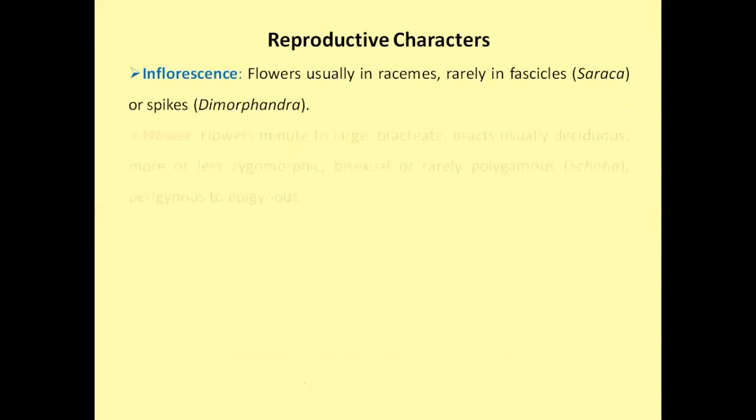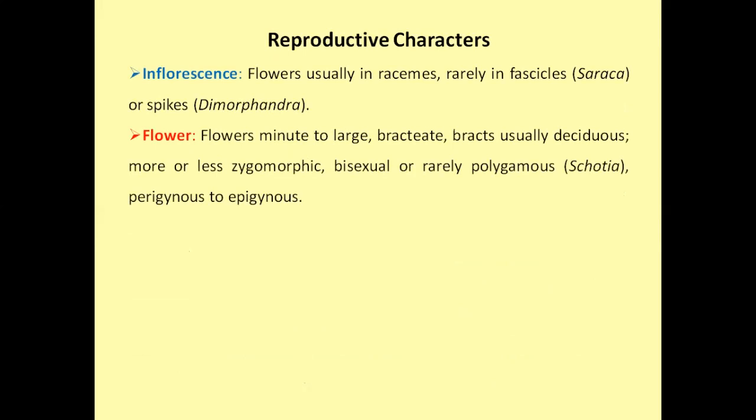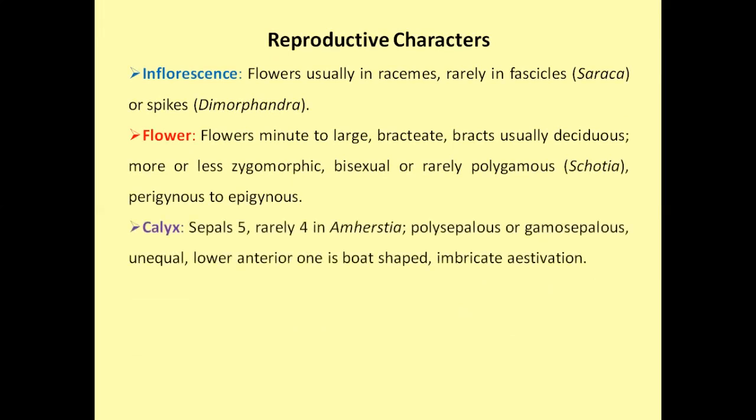Now we will discuss reproductive characters. The flowers are usually in racemes, rarely in fascicles or spike inflorescences. The flowers are minute to large, bracteate, and bracts are usually deciduous. The flowers are usually zygomorphic, bisexual or rarely polygamous, perigynous to epigynous. The calyx consists of 5 sepals; rarely 4 sepals are found in Amherstia. Polysepalous or gamosepalous condition is found. The sepals are unequal; the lower anterior one is boat-shaped. Imbricate aestivation is found.